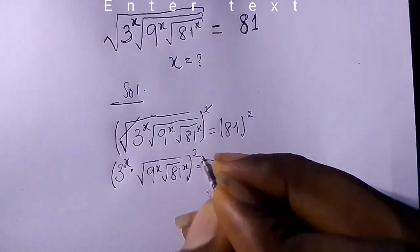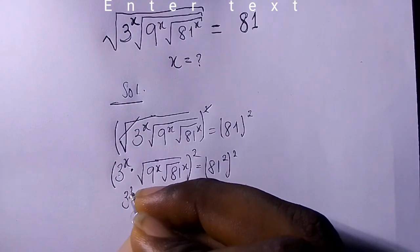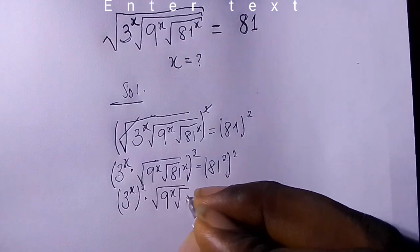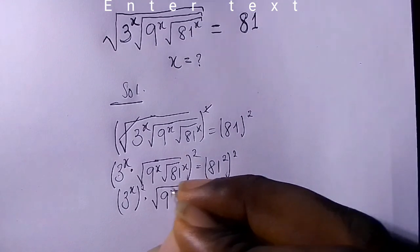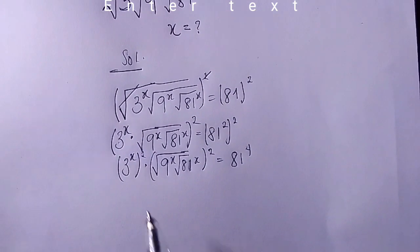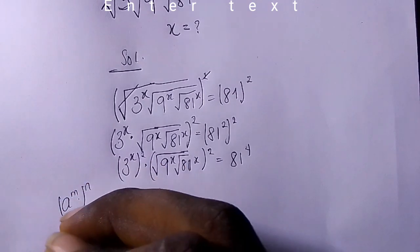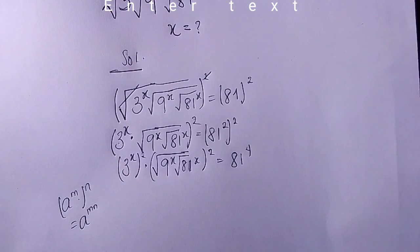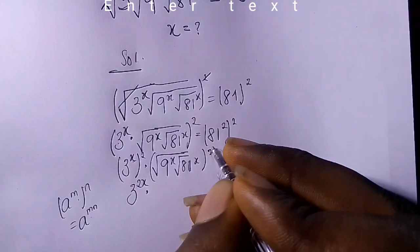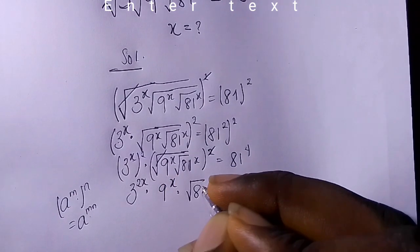We continue squaring both sides again. We have 3 raised to the power of x, squared, times root 9 raised to the power of x, times root 81 raised to the power of x, all squared, equals 81 raised to the power of 4. Remember the law: a raised to the power of m, raised to the power of n, gives us a raised to the power of m×n — we multiply the powers. So we get 3 raised to the power of 2x, times 9 raised to the power of x, times root 81 raised to the power of x, equals 81 to the power of 4.